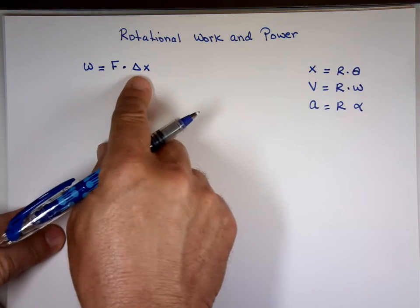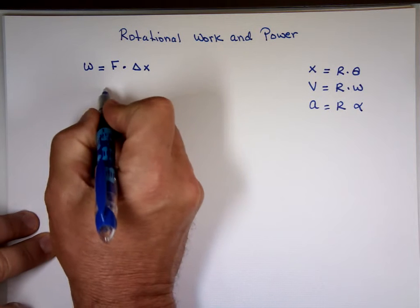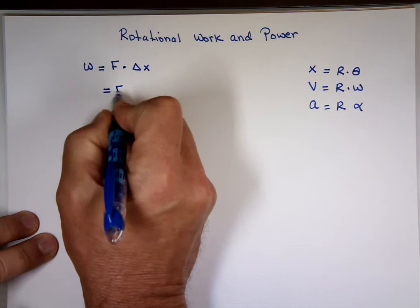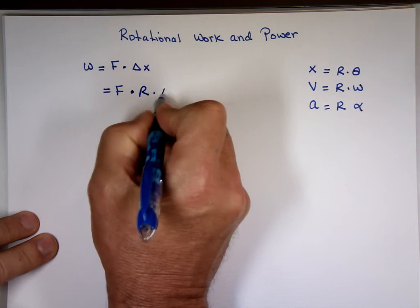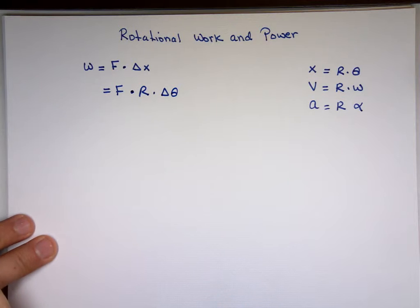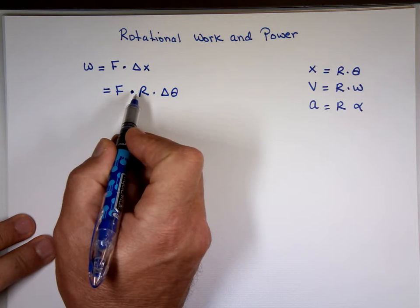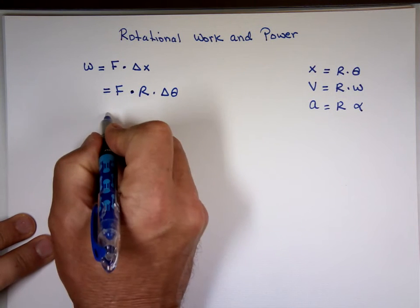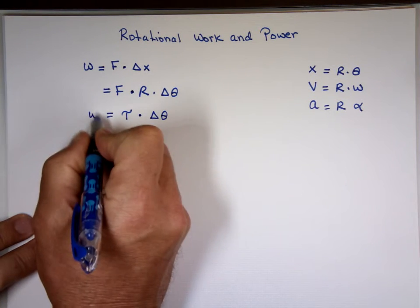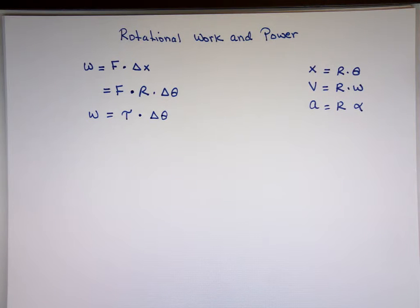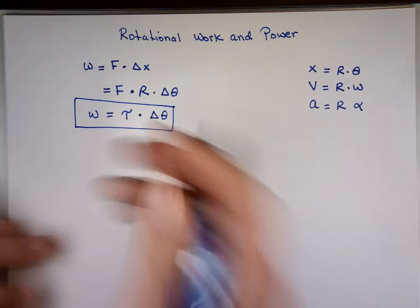So if I do that substitution, that means delta x can be r times delta theta. So I can write work as force times, in place of delta x, I'm going to write r times delta theta. Now, what is f times r? Isn't that torque? So the work done is defined as torque times the change in theta.